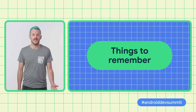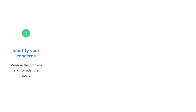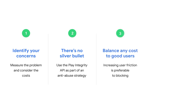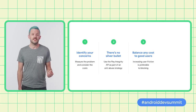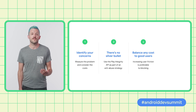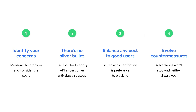Now, some important things to remember when using the API. Identify your main concerns — do you have a piracy problem, fraudulent traffic, cheating, or something else? Measure how big the problem is and consider what it's costing you, so that you know how much effort to put into reducing it. When it comes to integrity issues, there's no silver bullet, and the Integrity API isn't intended to be one. You should use the API as part of an overall security and anti-abuse strategy. Make sure you're taking into account the risk of false positives and any cost you might be introducing to good users. Rather than blocking risky traffic, it's generally better to increase friction by requiring additional steps, or to reduce functionality to the risky traffic. Finally, you should keep measuring and evolving.